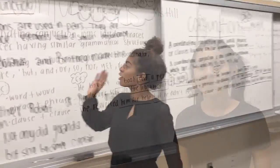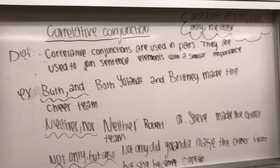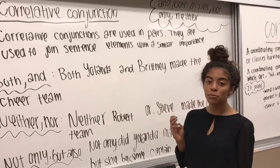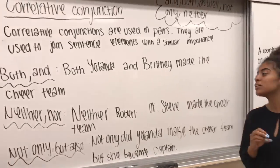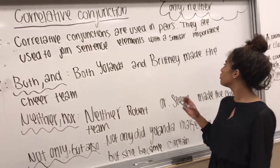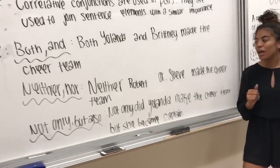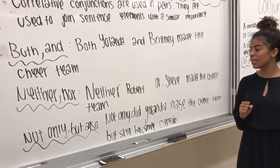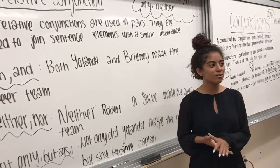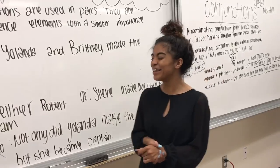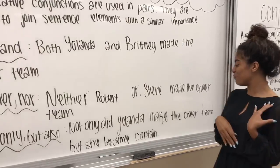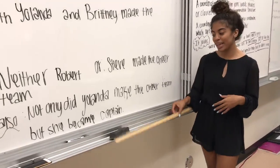I had correlative conjunctions. Correlative conjunctions are used in pairs and are used to join sentence elements of similar importance. Some examples: using 'both...and' — 'Both Yolanda and Britney made the cheer team.' Using 'neither...nor' — 'Neither Robert nor Steve made the cheer team.' Using 'not only...but also' — 'Not only did Yolanda make the cheer team, but she became captain.'